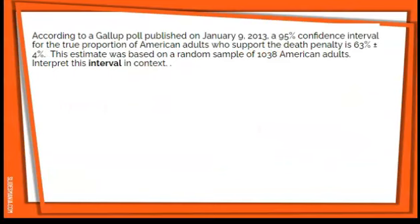According to a Gallup poll published on January 9th, 2013, a 95% confidence interval for the true proportion of American adults who support the death penalty is 63% plus or minus 4%. This estimate is based on a random sample of 1,038 American adults. Interpret this interval in context.